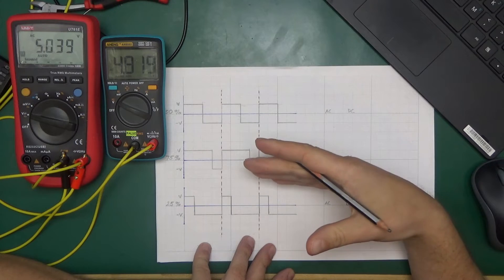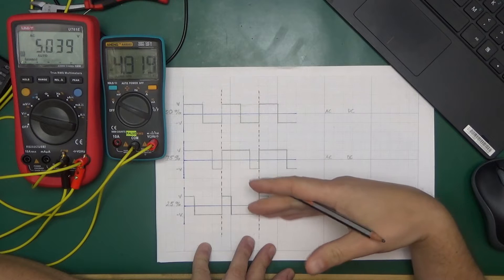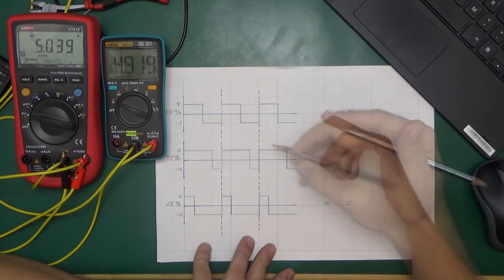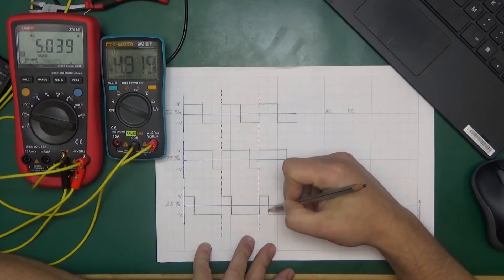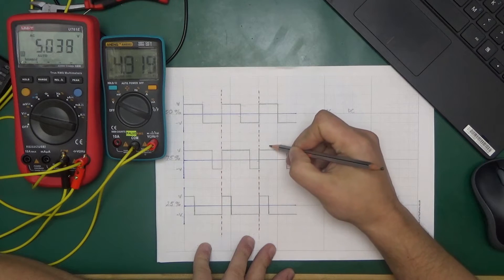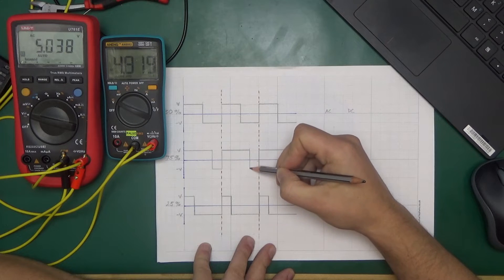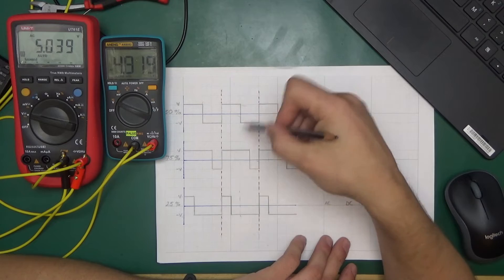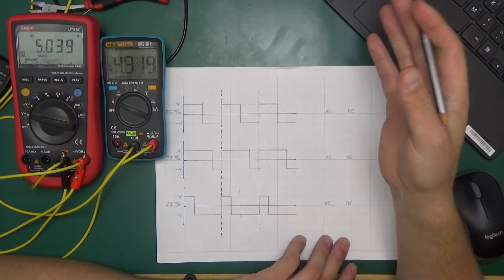That means that both of those square wave signals are no longer pure AC waveforms; those have a DC component to it. And the DC component in both cases, here and here, is what's left when you take out the pure AC waveform.